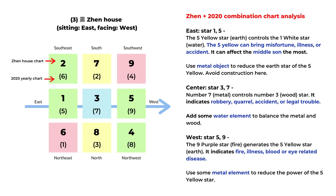For the east, the star combinations are one and five. The number five star is earth element and it controls the number one white star, the water element — a controlling relationship. The number five yellow star can bring misfortune, illness, or accident, and it can affect the middle son the most. We can use metal objects because both two and five are earth elements, and metal can reduce the earth. Add metal objects here and avoid construction so we don't disturb the energy.